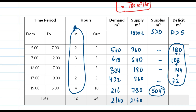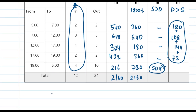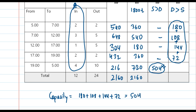We need to find the maximum cumulative deficit. Adding all consecutive deficit values: 180 + 108 + 144 + 72 = 504 m³. The maximum deficit will be when we add all these consecutive values, giving us 504 m³. So the capacity of the balancing reservoir by the first method is 504 m³.